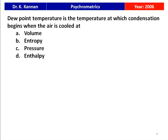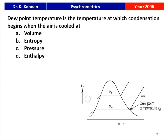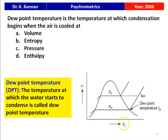The next question is from the 2006 question paper. Dew point temperature is the temperature at which condensation begins when the air is cooled at constant — volume, entropy, pressure, or enthalpy? From the temperature-entropy diagram, the atmospheric air is cooled to the dew point temperature where condensation begins to form. During this process, pressure is constant. So the dew point temperature is the temperature at which condensation begins when the air is cooled at constant pressure.